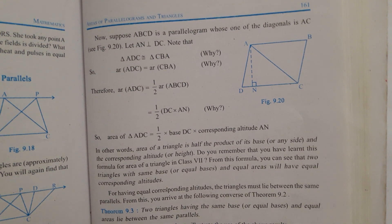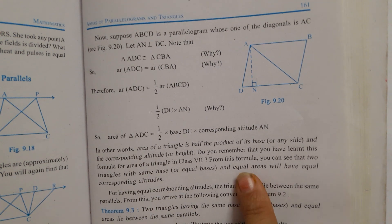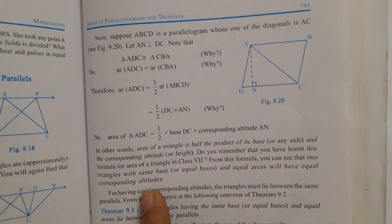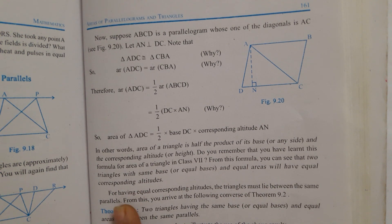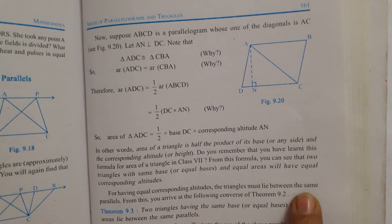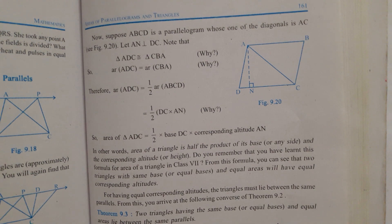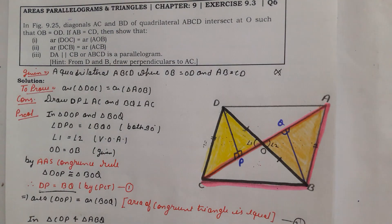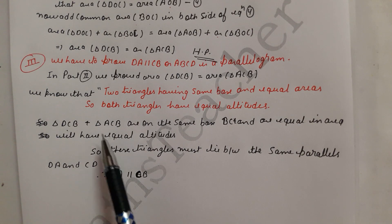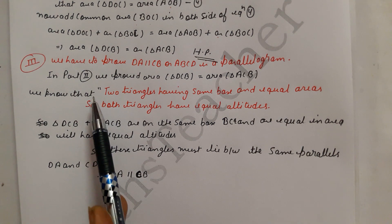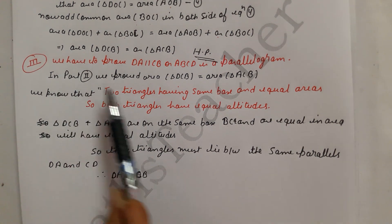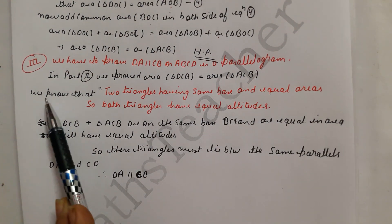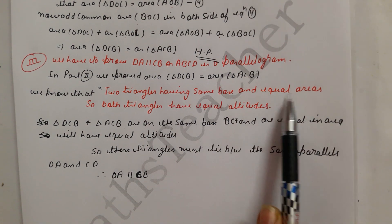The three conditions are: same base, same area, and equal altitude. The statement from the book says: if the base and area are the same, then the triangles have equal corresponding altitudes, and therefore the triangles lie between the same parallels. In Part 2 we proved that Area(DCB) equals Area(ACB), so we will use this here.